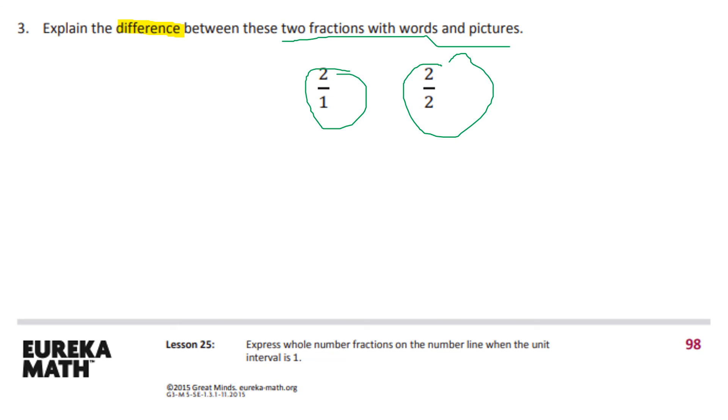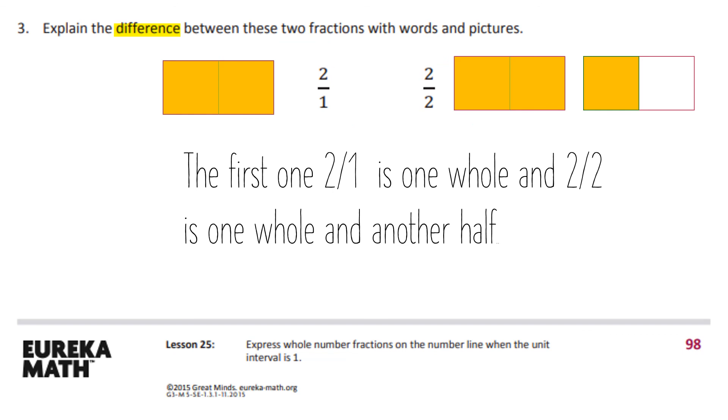Alright we're gonna go over the answer to this last problem. So as you see I drew it out and I said the first one, here's two ones and here's two halves. So I wrote: the first one, two ones, is one whole, and two halves is one whole and another half. So as you can see they are different and again this is our last problem for this lesson.